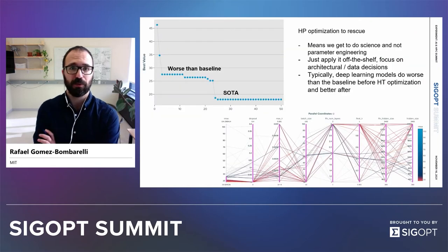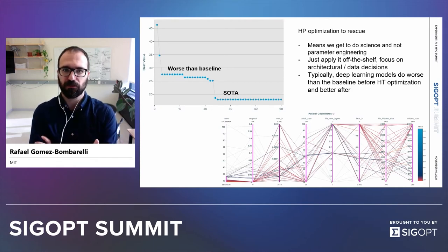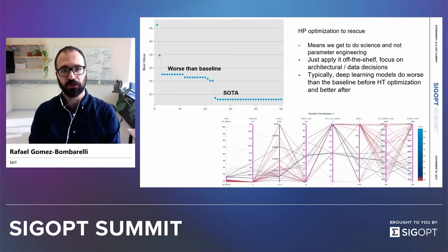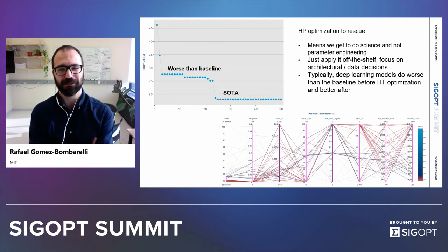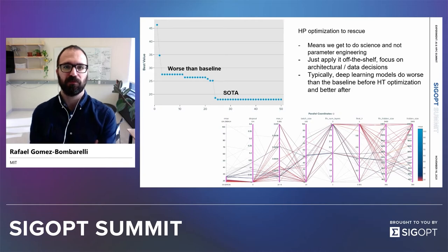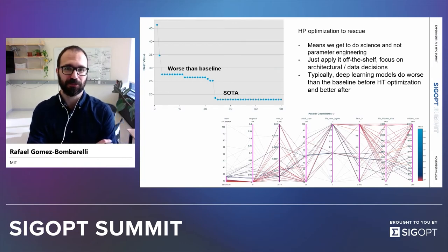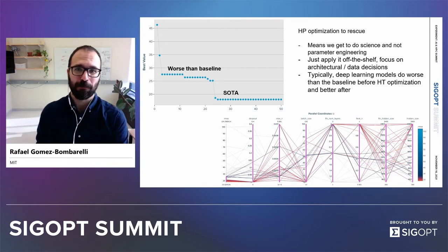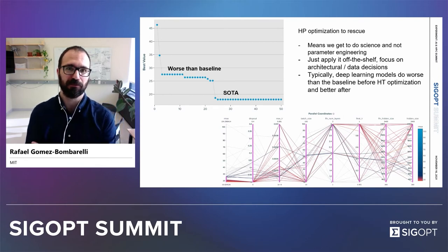Where does hyperparameter optimization come in? This is a constant in my group. We take a new task that has something to do with matter. At the beginning, nothing works — students are plugging pieces together and things don't work. Then it finally works, they're back-propagating end-to-end and training, but the models don't do too well. This happens every time. It finally plugs in, but the performance is not great. And we always do the same: now it's become a hyperparameter problem and we just take a step back and let the machine solve it.